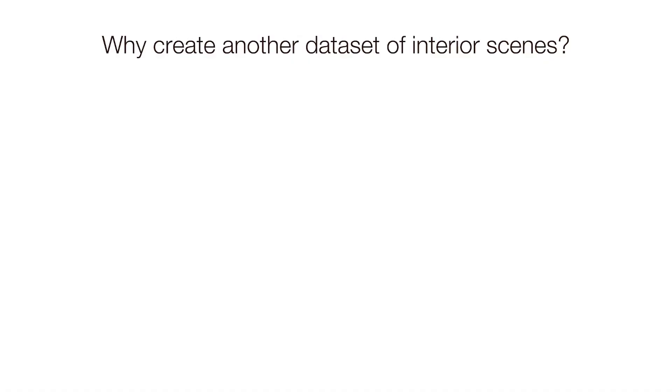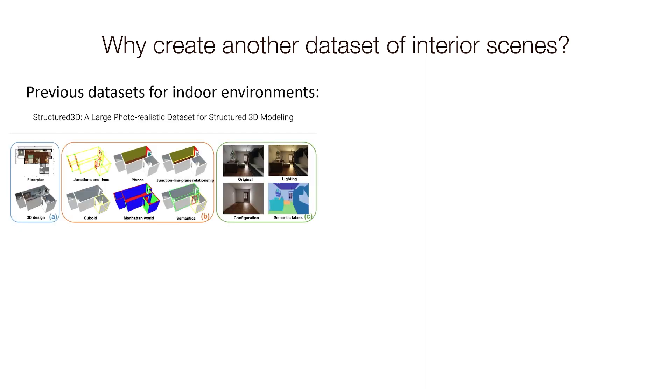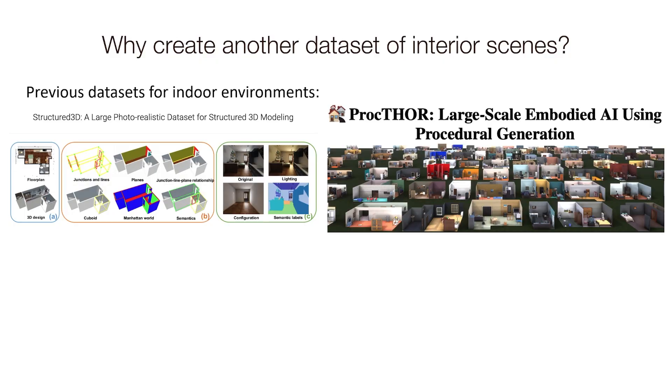Why create another one of these indoor datasets? These datasets typically fall short for a few different reasons. For example, we have Structured 3D, which provides professionally designed 3D layouts - very high quality - and comes with semantic labels, but there's only 3,500 scenes, which is a bit small. Then we have Proctor from AI2, with 10,000 procedurally generated scenes, but it's meant for embodied AI, so they don't provide egocentric trajectories or renderings of each scene.